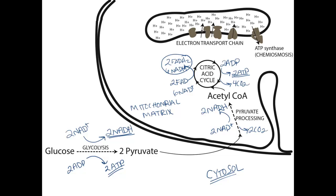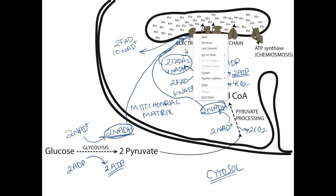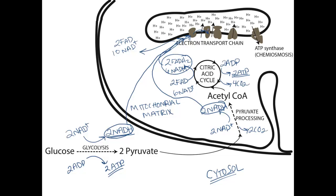Let's focus on these electron carriers, because where they carry their electrons is to the electron transport chain. When they pass on these high-potential energy electrons to the electron transport chain, they're oxidized back to FAD and NAD+. This FAD and NAD+ is recycled, becoming the inputs once again for glycolysis, pyruvate processing, and the citric acid cycle. That is the fate of these high-potential energy electrons — they get passed on to the electron transport chain, passed from one point in the chain to the next.